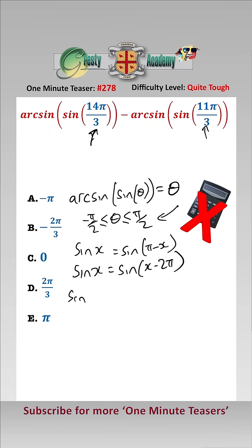So sine of 14 pi over 3 using the second formula equals the sine of 8 pi over 3 and again using the second formula equals the sine of 2 pi over 3, but that's still not in the range so we now use the first formula and that equals sine of pi over 3.